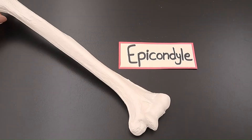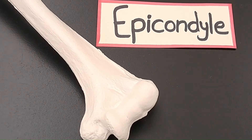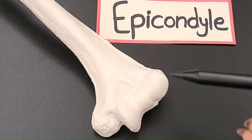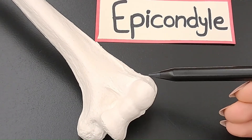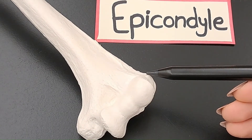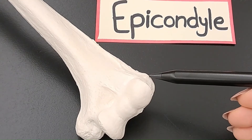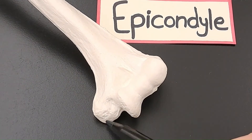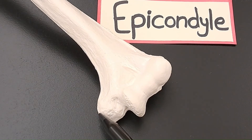Moving to the fifth projection, an epicondyle, which is an elevated raised area on or above a condyle. So this is the condyle, and this is the epicondyle. This is the condyle, and the tip here is the epicondyle.